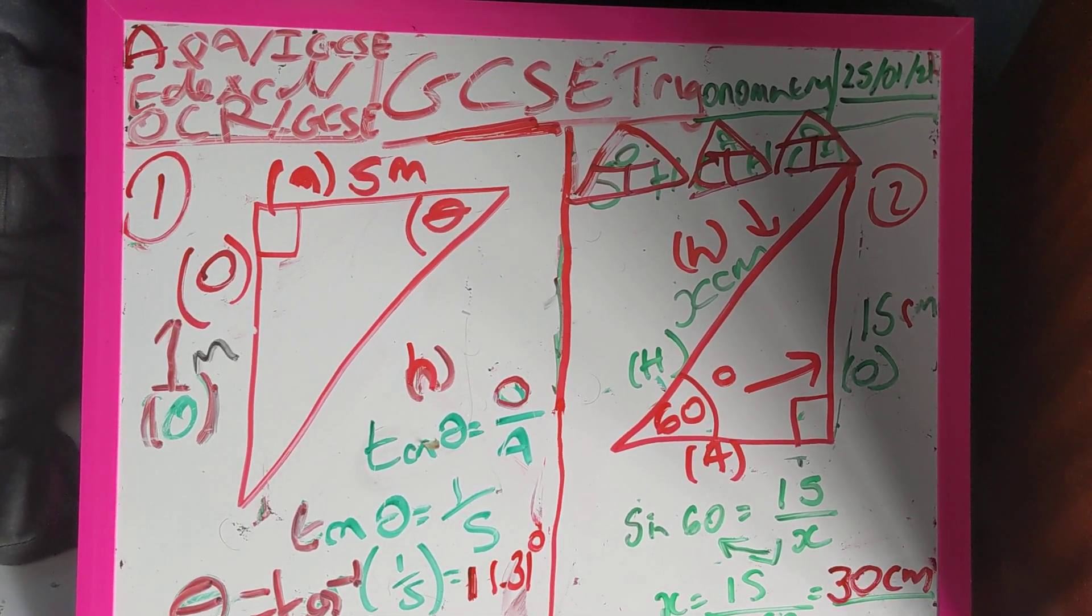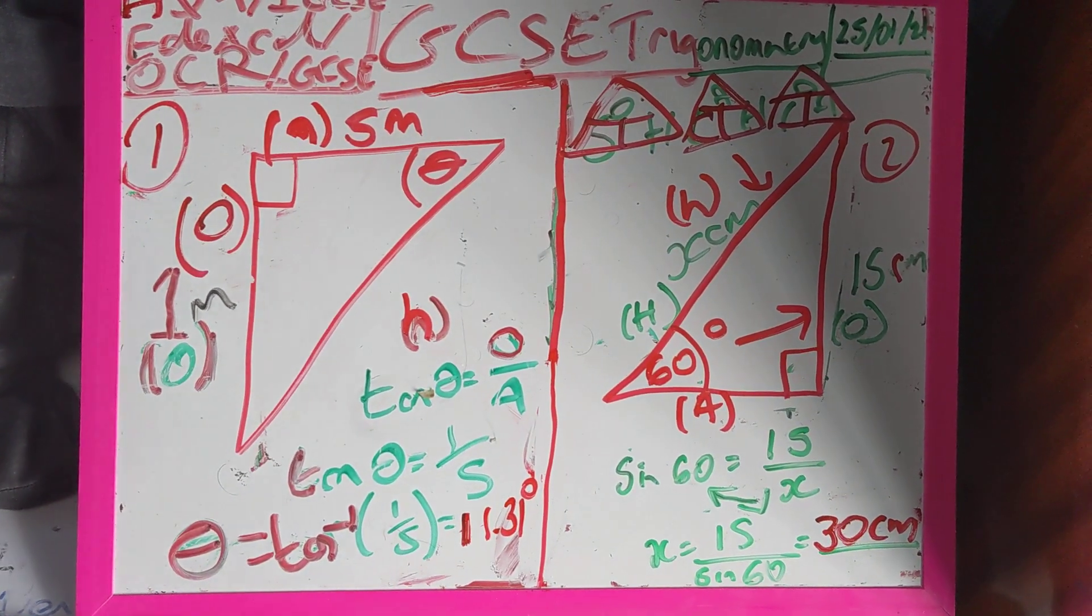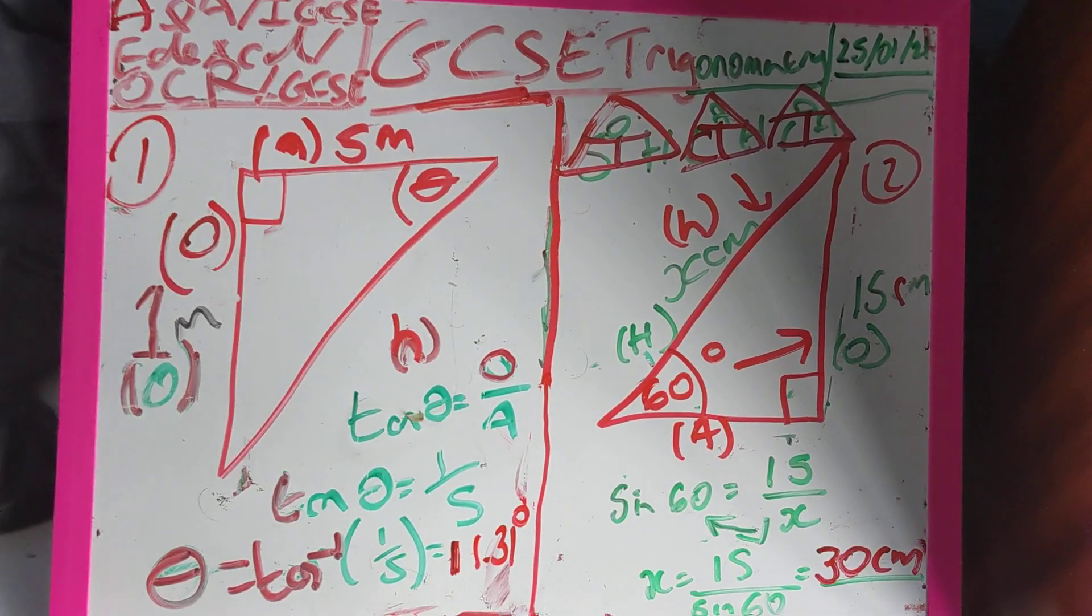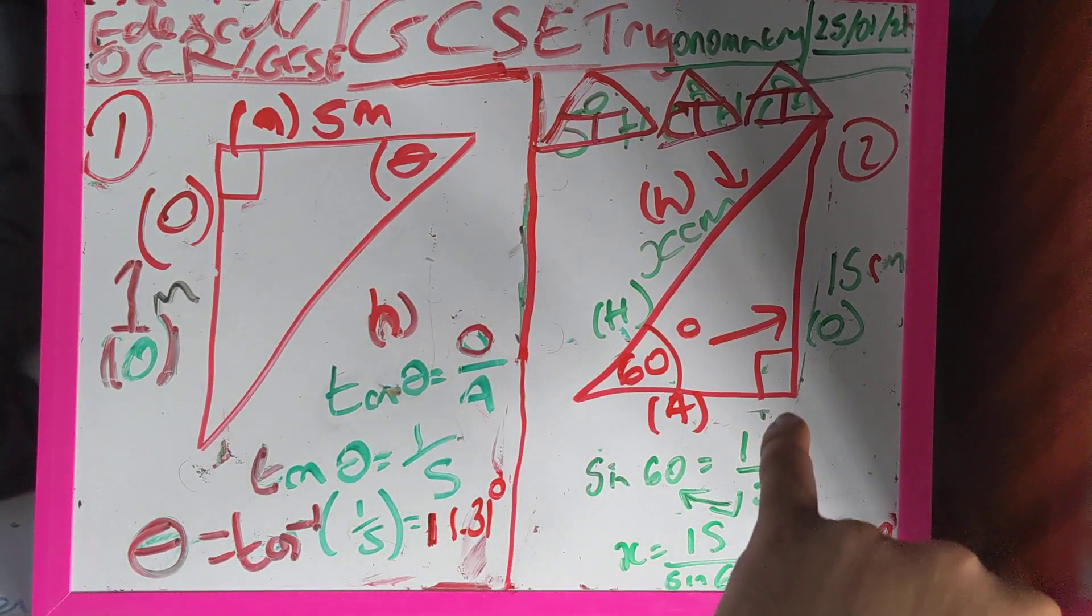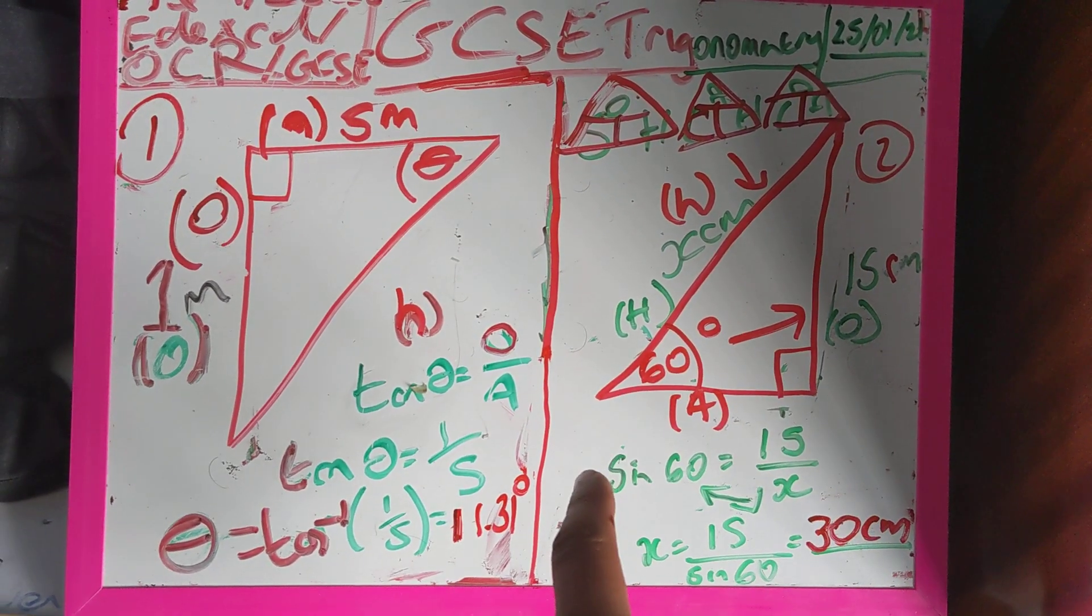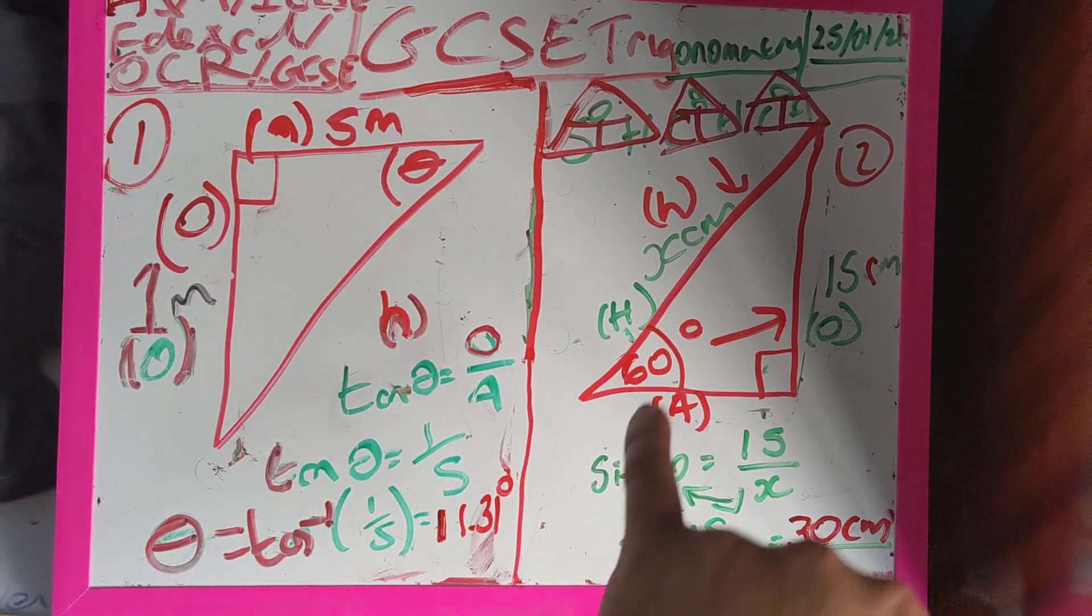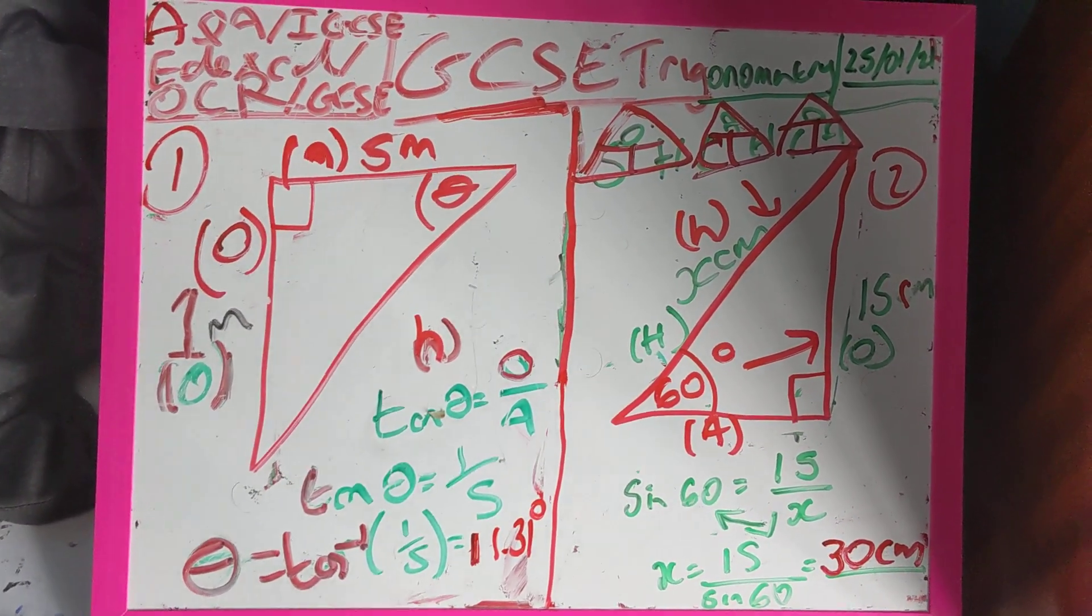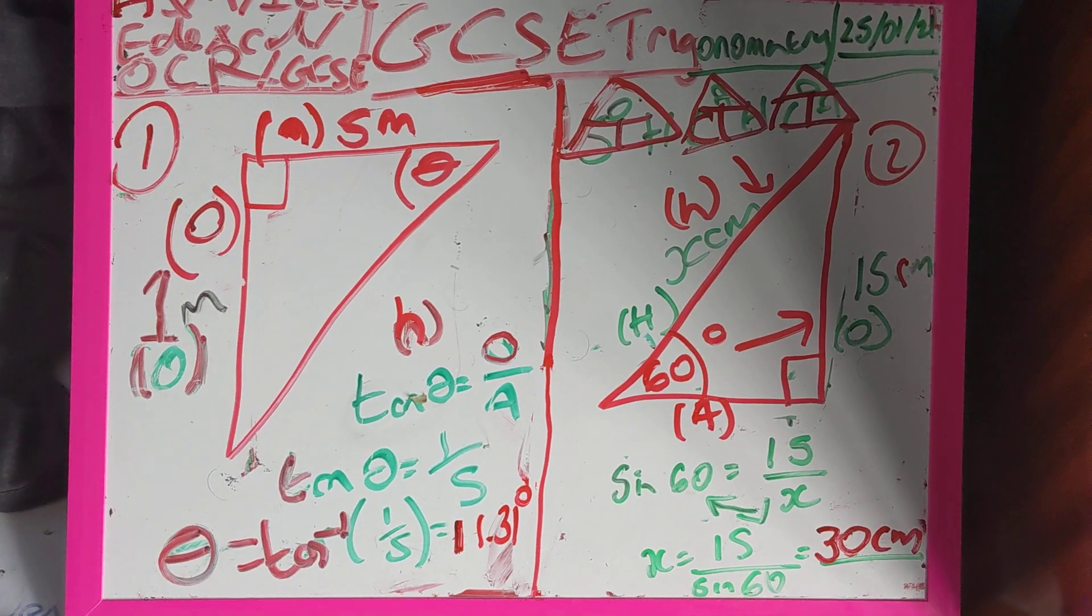So those are the two examples for trig. This one was to work out an angle and that one was to work out a length. The length just requires rearranging to work out what the hypotenuse is. And lastly, the answer seems correct to me because the answer has to be bigger than 15. We don't know obviously what this side is, but the hypotenuse by definition is always the longest side of my triangle, therefore the answer has to be bigger than 15. So the hypotenuse is always the longest length of the right angle triangle.